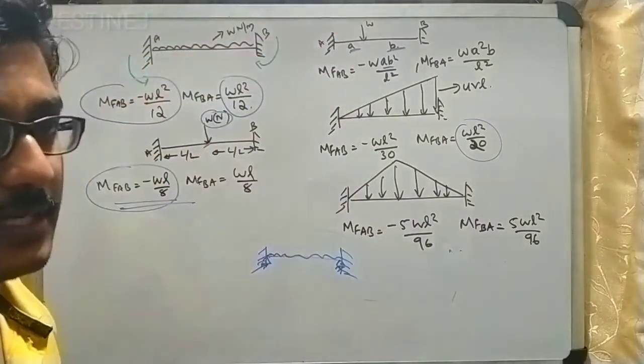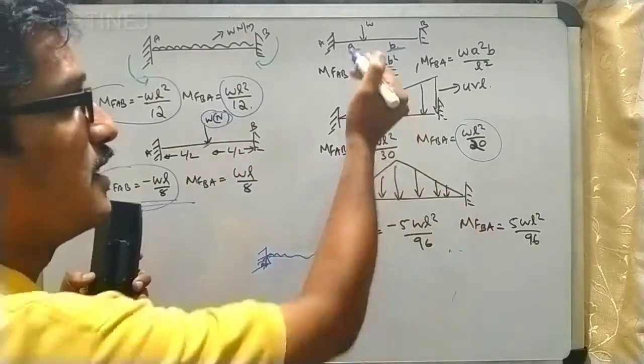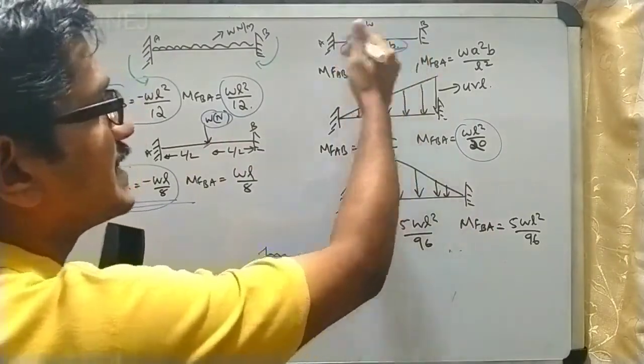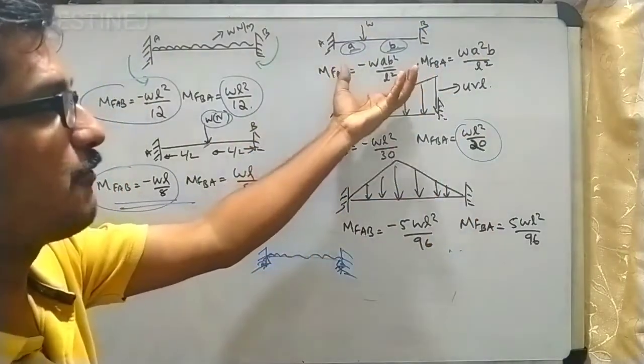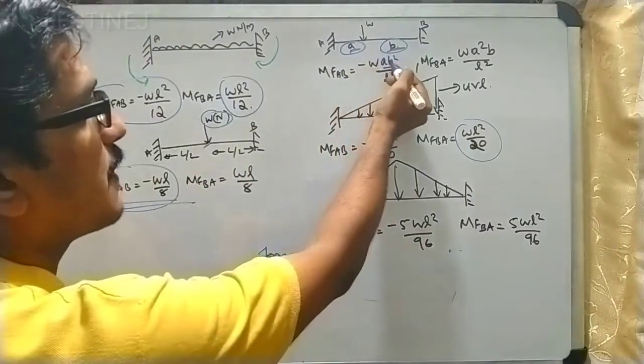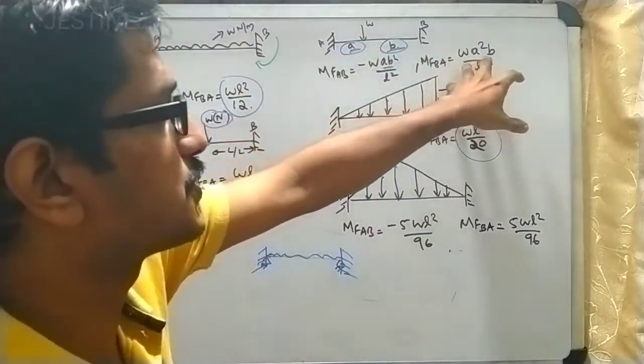The third condition or third case is when this point load is not acting at the center, it is not acting exactly at the center, some distance A and B from each support. Then the value is going to be minus W AB square by L square, and here positive WA square B by L square.